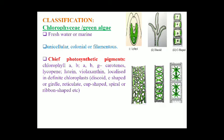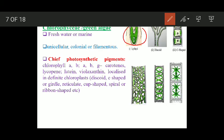The chloroplasts in this group vary in terms of their shape. They may be disc-shaped, C-shaped or girdle-shaped, reticulate, cup-shaped, spiral, or ribbon-shaped. Here you can see different types of chloroplasts based on their shape: cup-shaped, disc-shaped, and C-shaped or girdle-shaped.